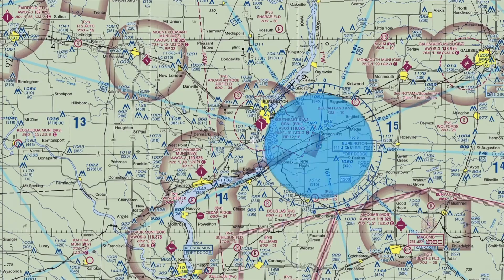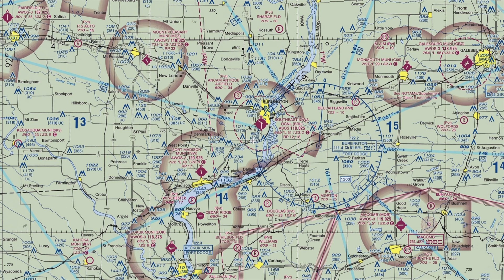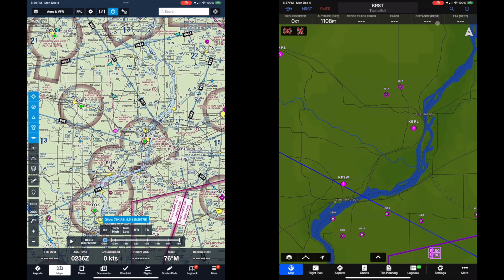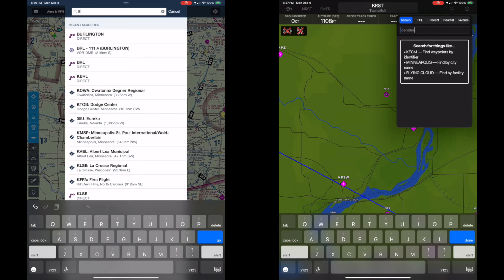The first step should be to take out your sectional and look for the compass rose. Once you find it, somewhere within that circle should be the information box, and that box will contain the name of the station, the frequency, the station identifier, and other information depending on the type of nav aid. In this case, the frequency is 111.4 and the identifier is BRL. Alternatively, if you're using ForeFlight or Garmin Pilot, you can use their search functions. If you know the three-letter identifier, that makes finding the station simple.